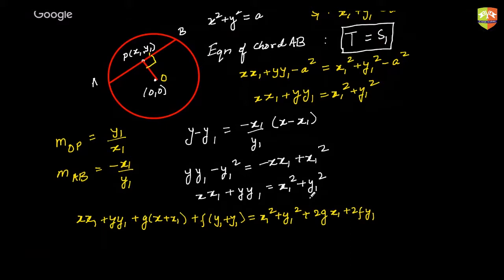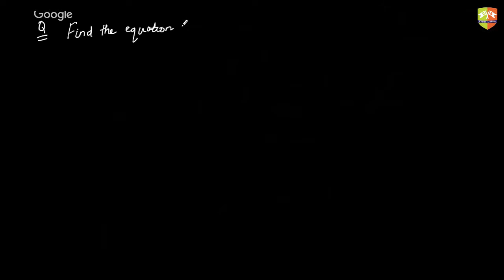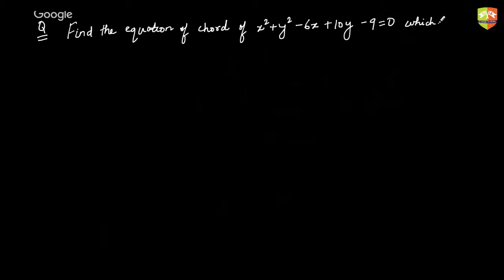Is that fine? No questions about chord bisected at a given point? Let's quickly take a question on this so you understand the concept well. Find the equation of the chord of the circle x² + y² − 6x + 10y − 9 = 0, which is bisected at (−2, 4). Please do this and type your answer in the chat box.